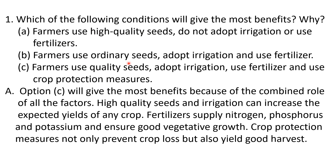Option B: farmers use ordinary seeds, not high quality seeds, but they adopt irrigation and fertilizers. Option C: farmers use quality seeds, adopt irrigation, use fertilizer, and also use crop protection measures. It's a common sense question — option C is the best, there is no doubt about it, but we will give some explanation as well.